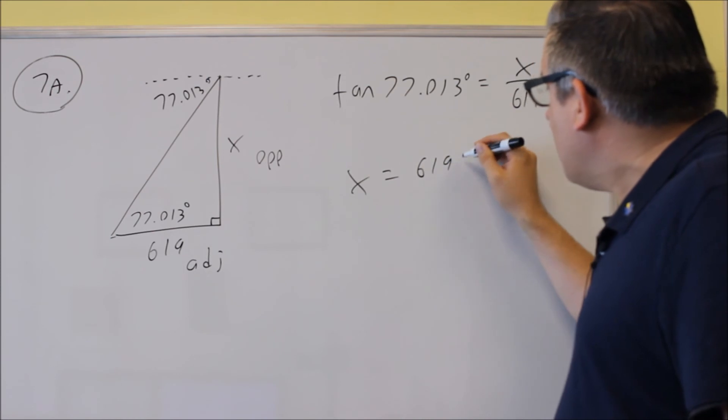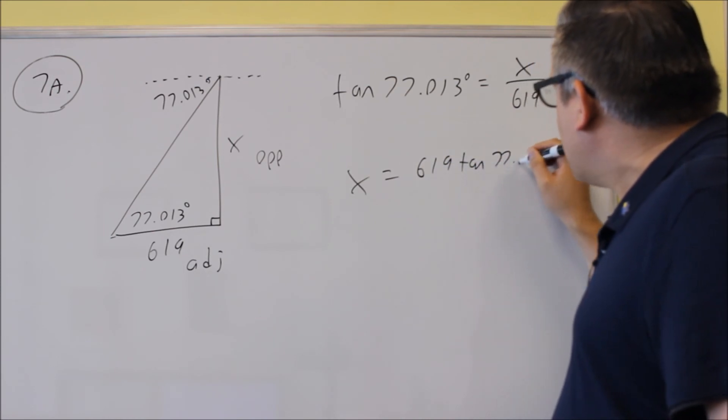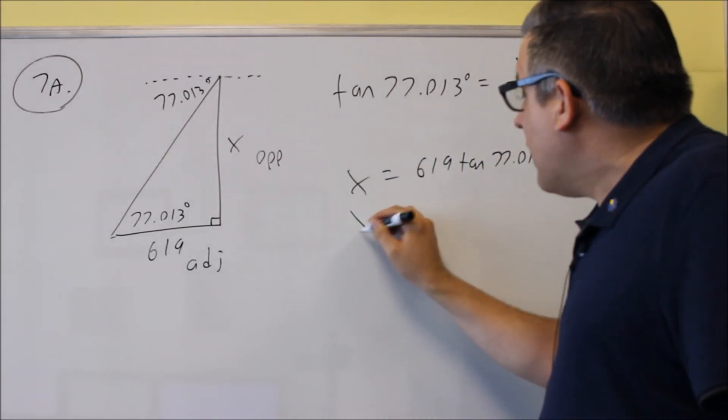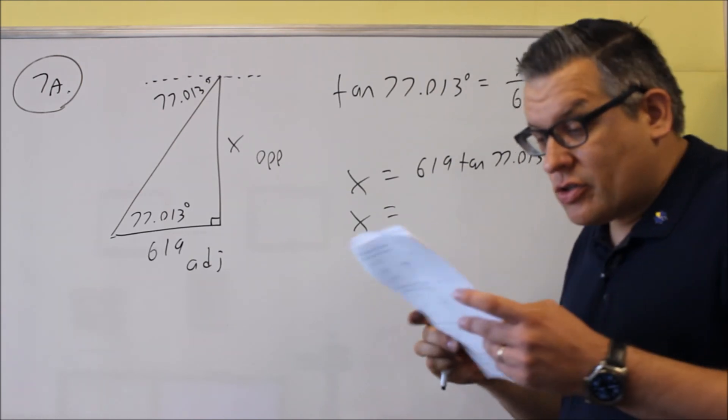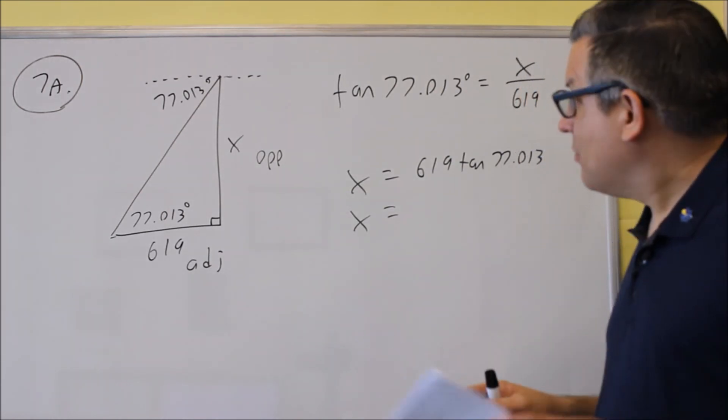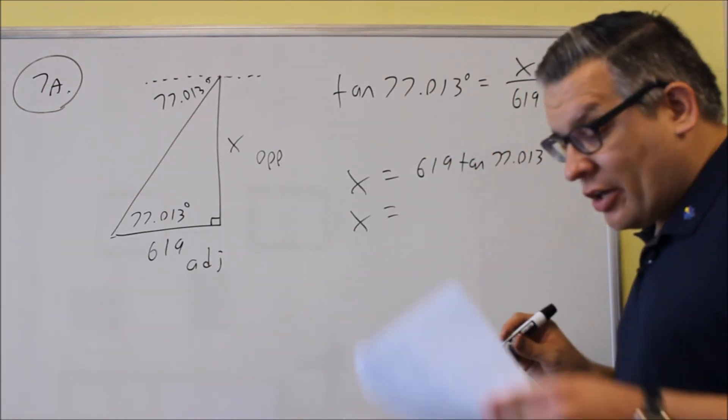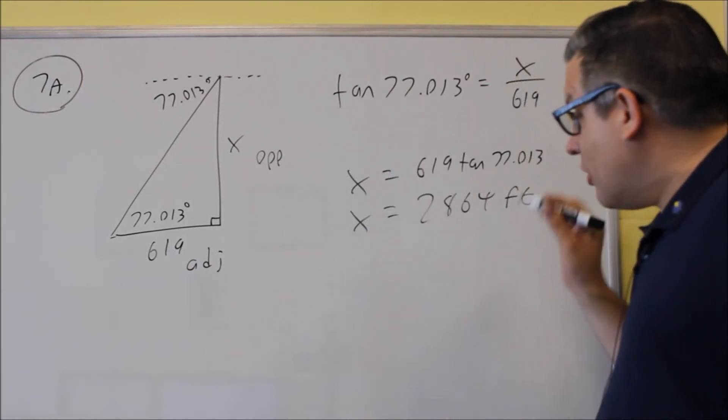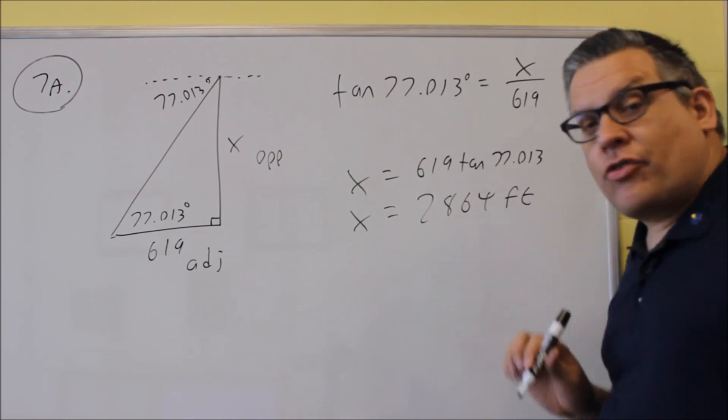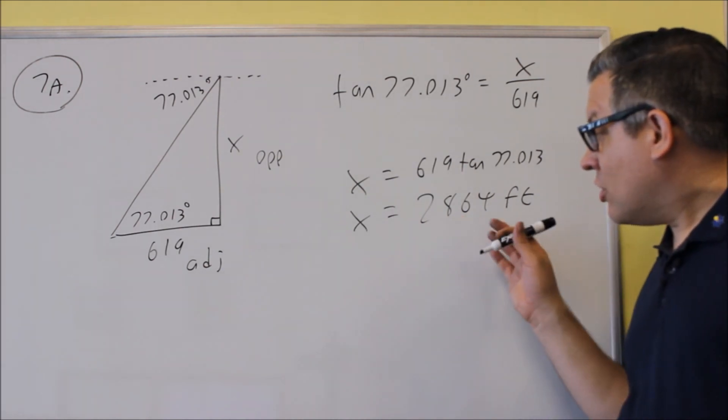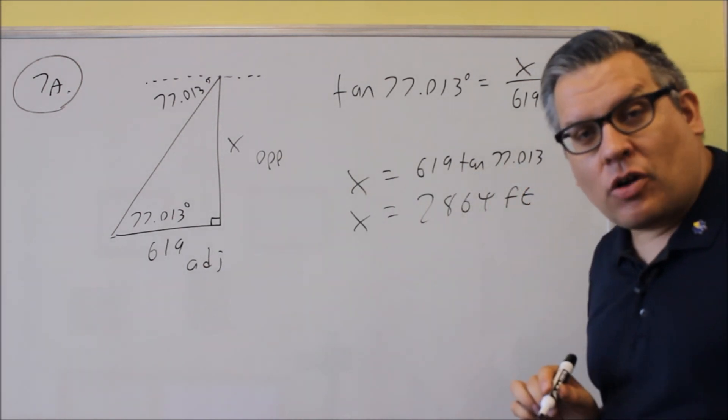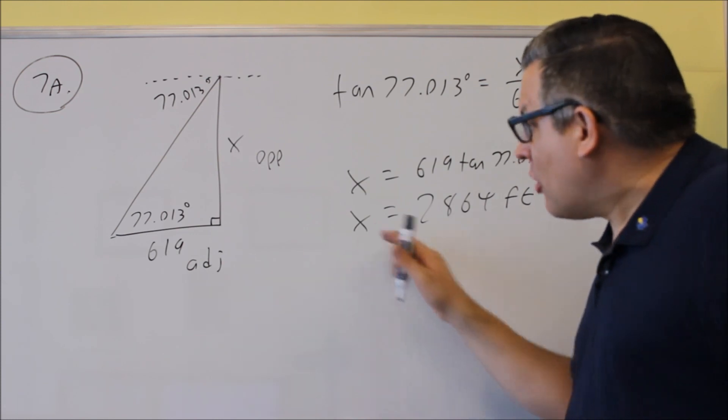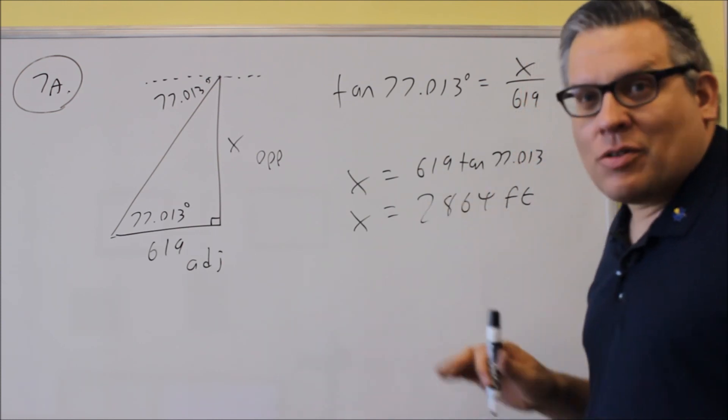x equals 619 times tangent 77.013, and it asks us to round to the nearest foot. So when we multiply this together, you get 2864 feet, and this is an accurate amount for the height of this building. This is actually more than a half mile tall at this point. So this is the tallest building at the time this video was shot.